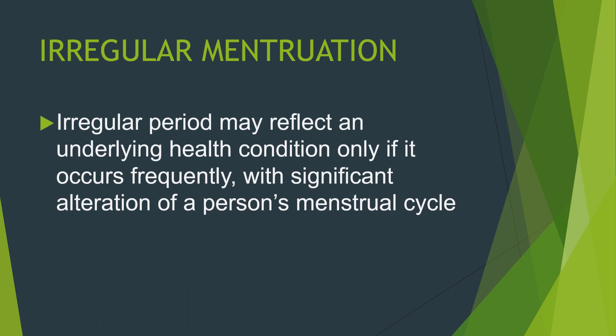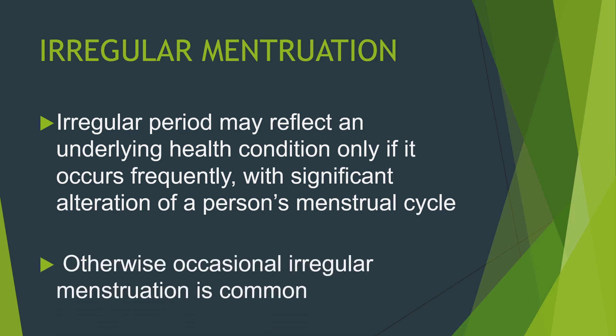Irregular periods may reflect an underlying health condition only if they occur frequently with significant alteration of a person's menstrual cycle. Otherwise, occasional occurrence of irregular menstruation is a common experience and may not typically represent an underlying health condition.